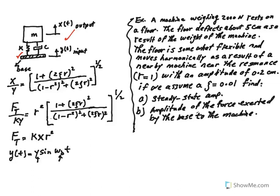After going through the discussions and derivations, this ratio of x over y is known as the displacement transmissibility or amplification. Be careful with the bracket — it is raised to power one half, so it's under the radical. The ratio of F_t over ky is known as force transmissibility; remember it's in non-dimensional form.